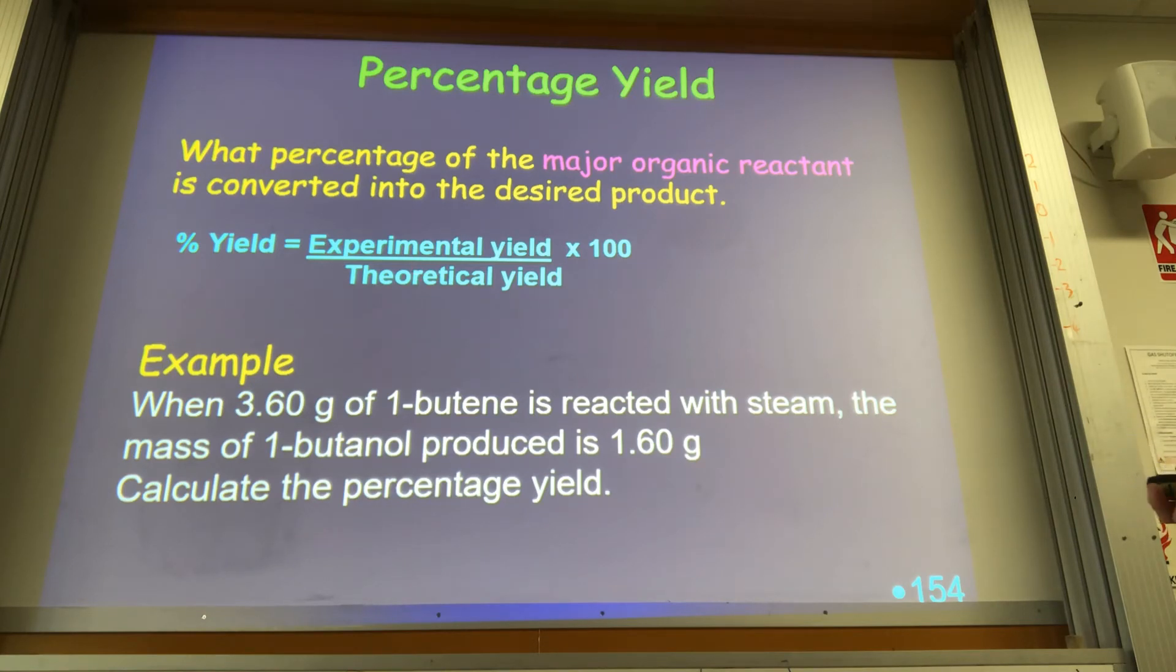So 3.6 grams of 1-butene reacts with steam. We get 1-butanol, 1.6 grams. Calculate the percentage yield. Well, that's our actual yield. Our theoretical yield is when we do the stoichiometry on 3.6 grams.